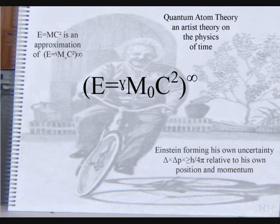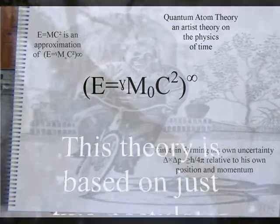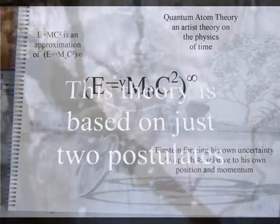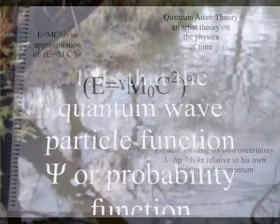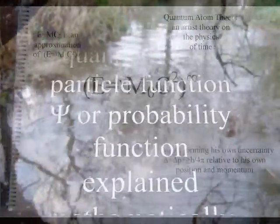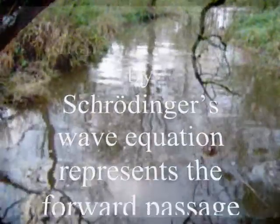In this way, we link the time dilation of Einstein's theories on relativity with a deeper understanding of quantum mechanics, to give us an objective understanding of our universe that fits in with the reality of our everyday life. The theory explained in the rest of this video is based on just two simple postulates. The first is that the quantum wave particle function, or probability function, of quantum mechanics, represents the forward passage of time itself.